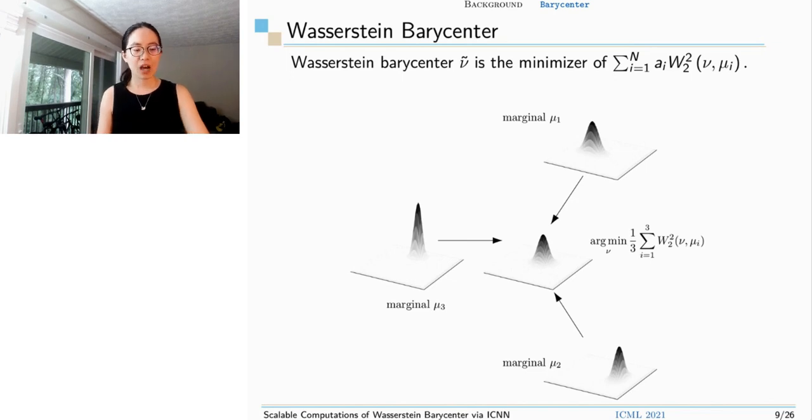Until now, we have all our tools ready. Let's see how to use them to solve the barycenter problem. Actually, Wasserstein barycenter is defined in a trivial way. It's just a minimizer of weighted summation of Wasserstein distance to all the marginal distributions. Sum from i=1 to N, lambda_i times Wasserstein distance between nu and mu_i. Mu_i is the i-th marginal distribution.